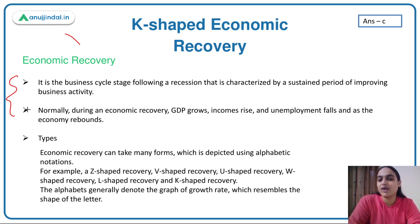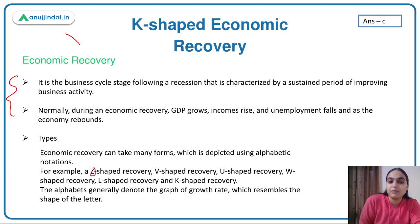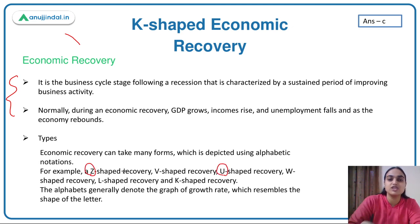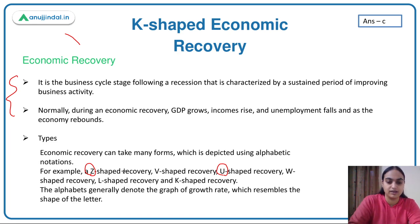These trends are depicted through the Z-shape recovery, V-shape recovery, U-shape, W-shape, L-shape, and K-shape recovery. These alphabets basically show the graphical representation — they show the growth trend happening in any economy. Let us try and understand each of these types one by one.